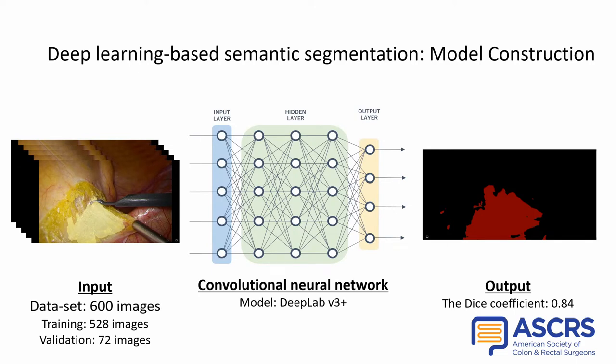We developed a semantic segmentation model that implements an algorithm inputting the created annotation data into the deep learning model as teacher data and outputting the area of areolar tissue as a predicted result. For accuracy evaluation of the semantic segmentation, the DICE coefficient was used — an index of the degree of overlap between the ground truth region and the predicted result region. A DICE coefficient of 0 means no overlap, and a DICE coefficient of 1 means the two regions are exactly the same. The accuracy of this model was 0.84 with a DICE coefficient.